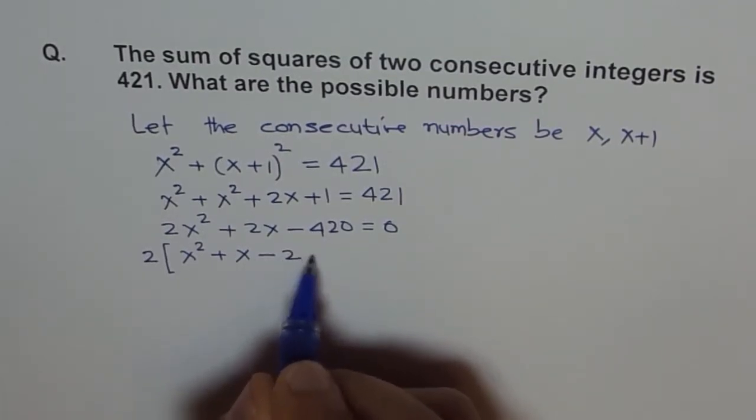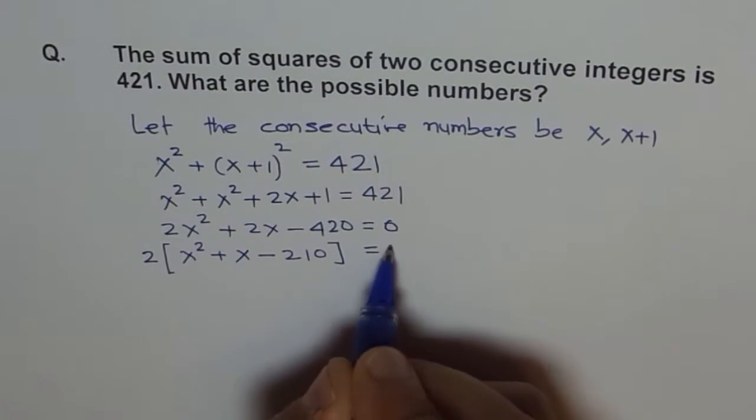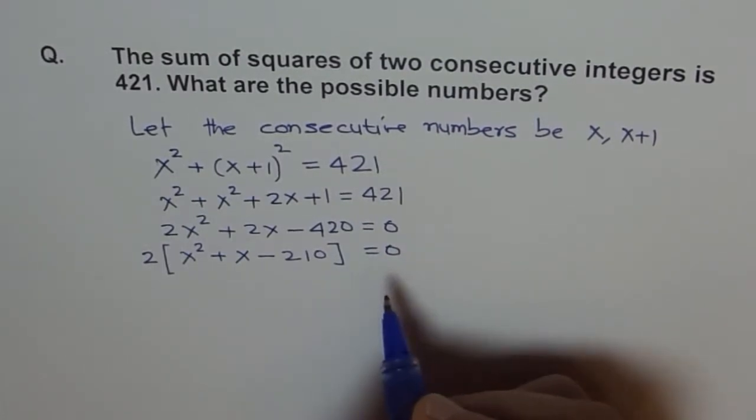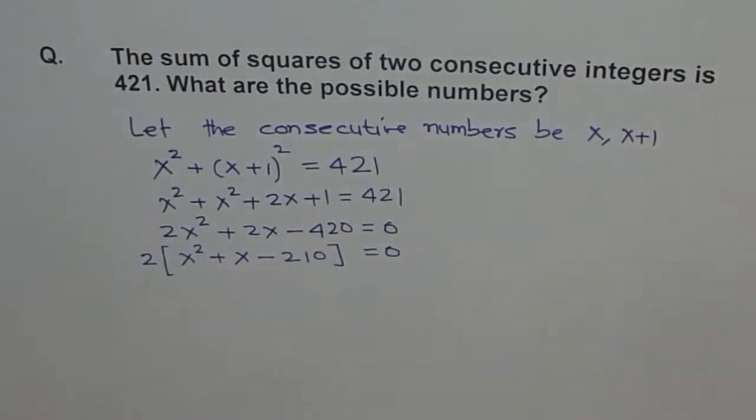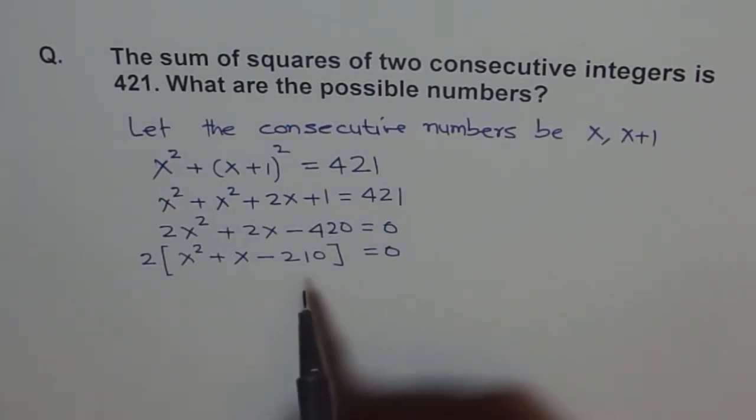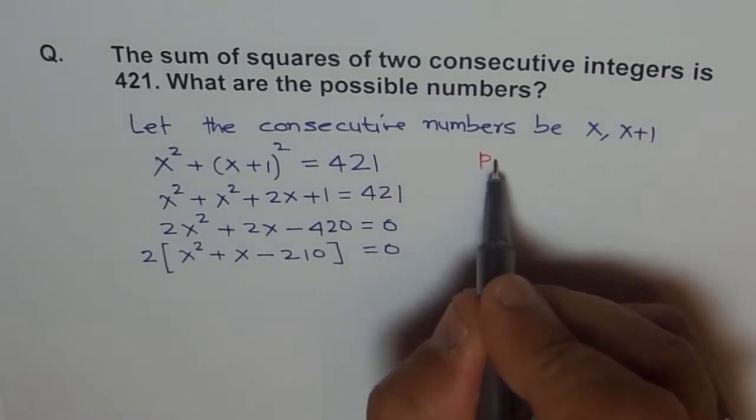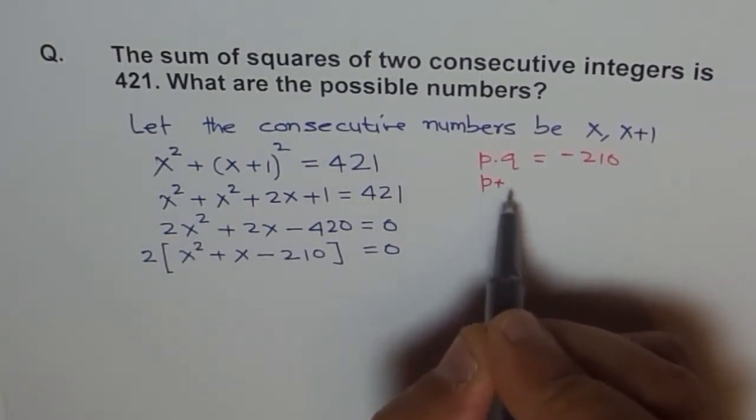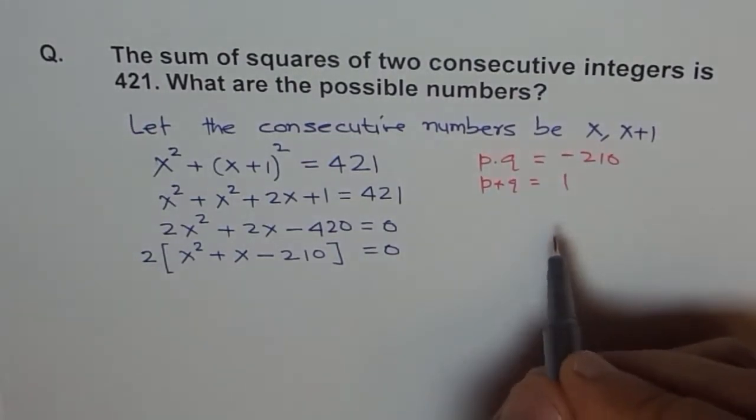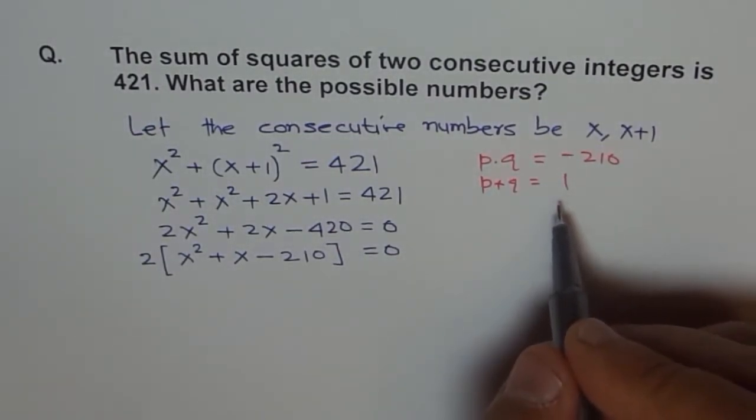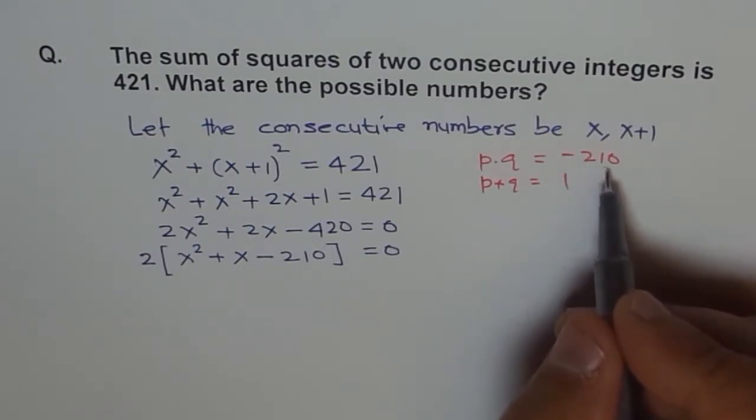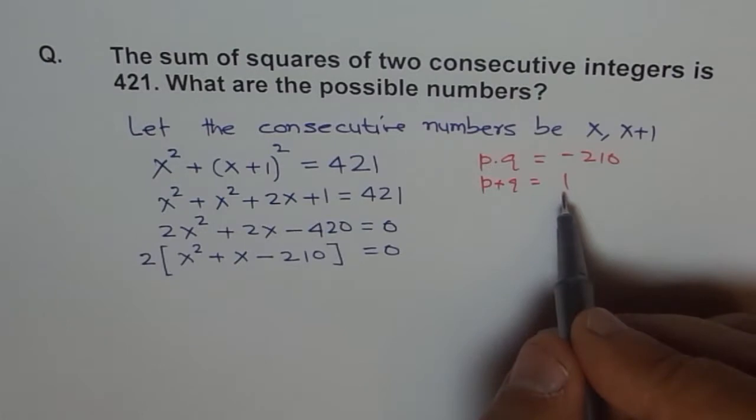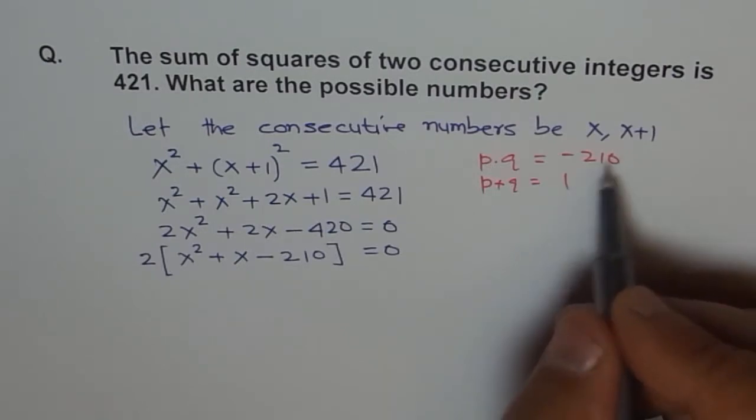That is our equation. Now we need to factor this equation. To factor, what we should do is we need product of two numbers as minus 210 and sum, that is p plus q, as 1. So we are looking for two numbers whose product is minus 210 and sum is 1, so bigger number is positive. Now how to get such big numbers factors?